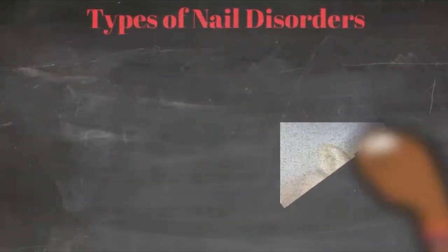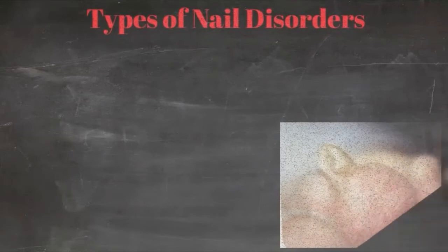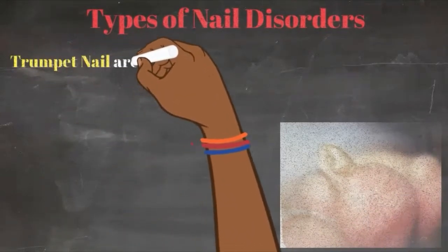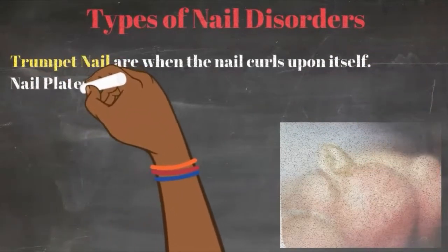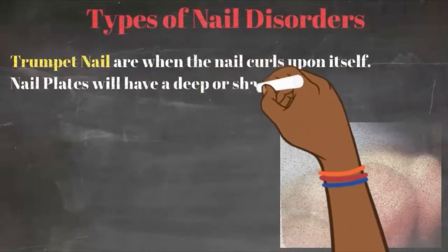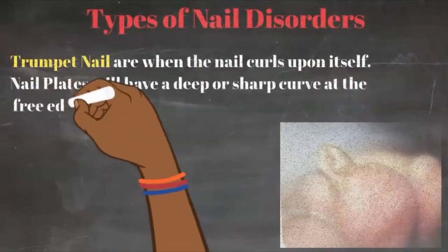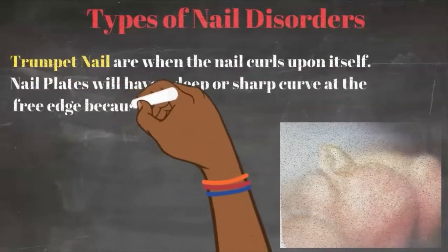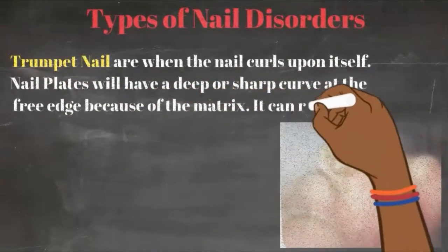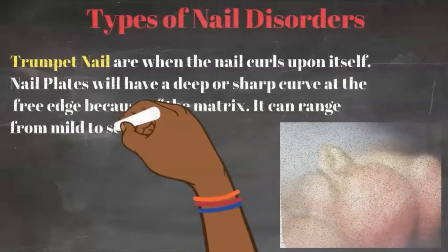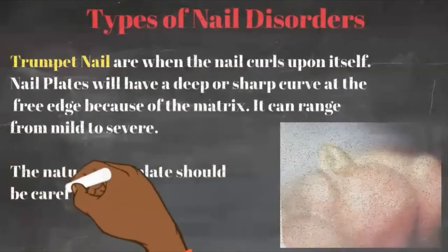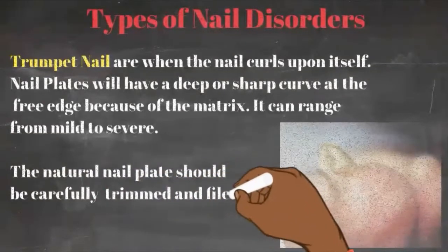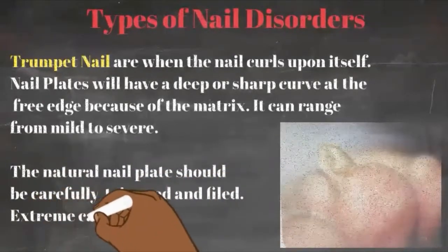Let's talk about trumpet nails. This is when the nails curl upon themselves — again, something you will most likely see in someone who is older and on their toenails. The nail plates have a deep or sharp curve at the free edge because of the matrix, and it can range from mild to severe. The natural nail plate should be carefully trimmed and filed, but remember, extreme cases should not be handled by us — we should refer them to a physician or podiatrist for help.